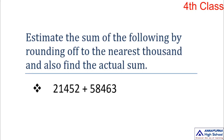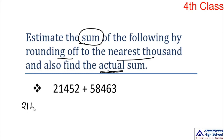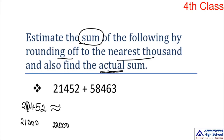Now let's estimate the sum of the following by rounding off to the nearest thousands, and also find the actual sum. We did this for hundreds earlier, so you are familiar with this approach. First number: 21,452. Find the nearest thousand — 1 is in the thousands place, so 21,452 lies between 21,000 and 22,000.